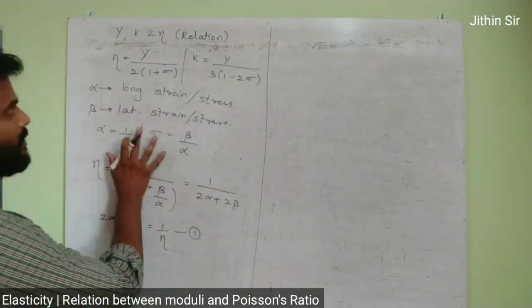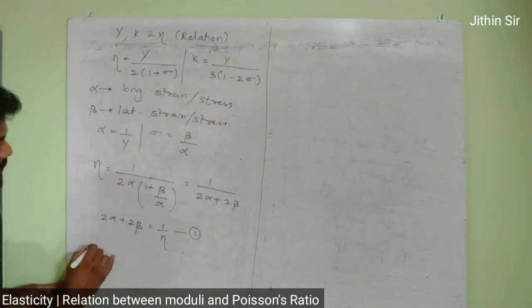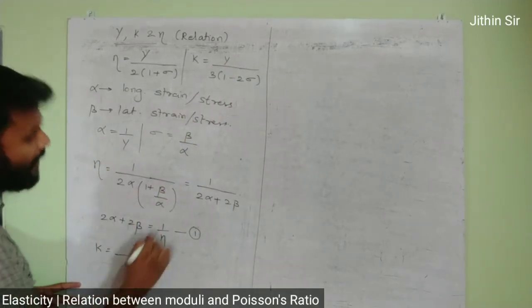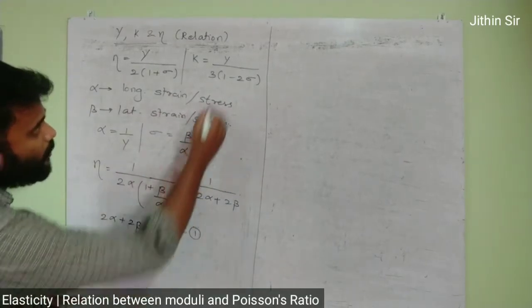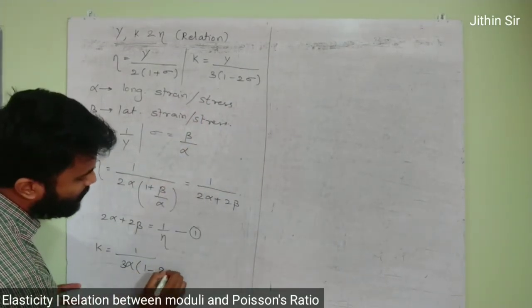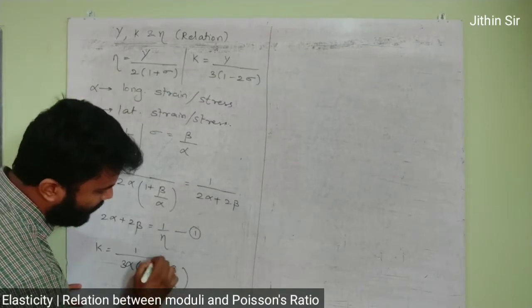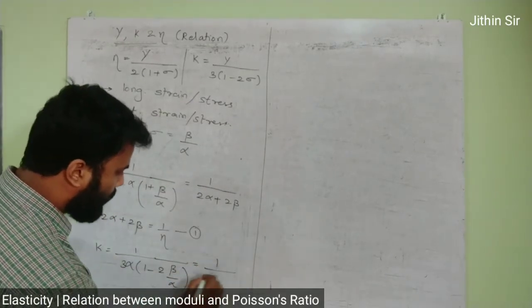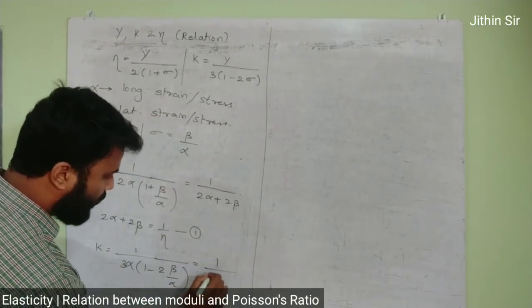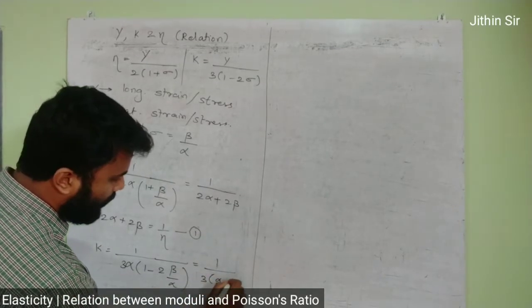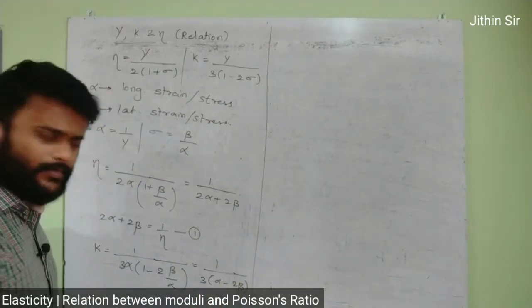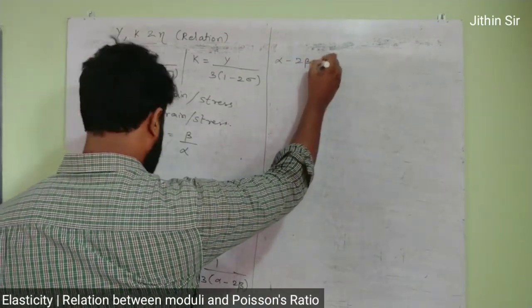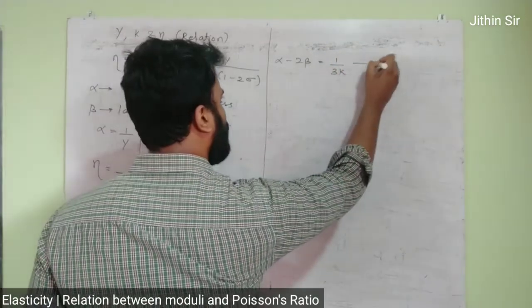Now we will prepare the second equation. K equals, instead of y we write 1 by alpha, over 3 times 1 minus 2 sigma, where sigma is beta upon alpha. If I open the bracket, I will get 1 by 3 alpha times alpha minus 2 beta. If I rearrange this, we get alpha minus 2 beta equals 1 by 3k. This is equation 2.